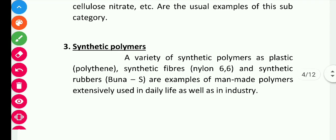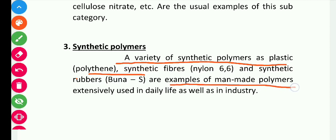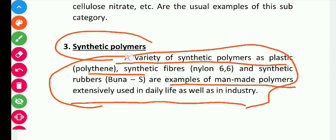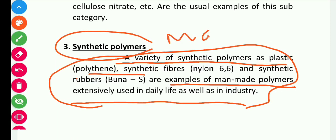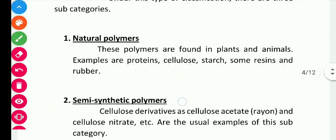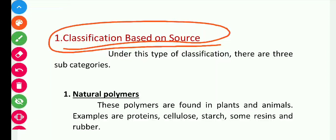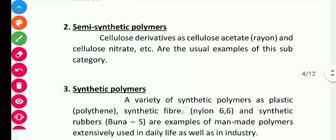Synthetic polymers are also called man-made polymers. A variety of synthetic polymers include plastics, polyethylene, synthetic fibers, fabric materials, and synthetic rubbers — these are all examples of man-made polymers. They are extensively used in daily life and in industry. The mug, brush, pipes for water connections, and plastic water bottles you use — all come under synthetic polymers. So based on the source, we classify polymers into three types: natural, semi-synthetic, and synthetic polymers.